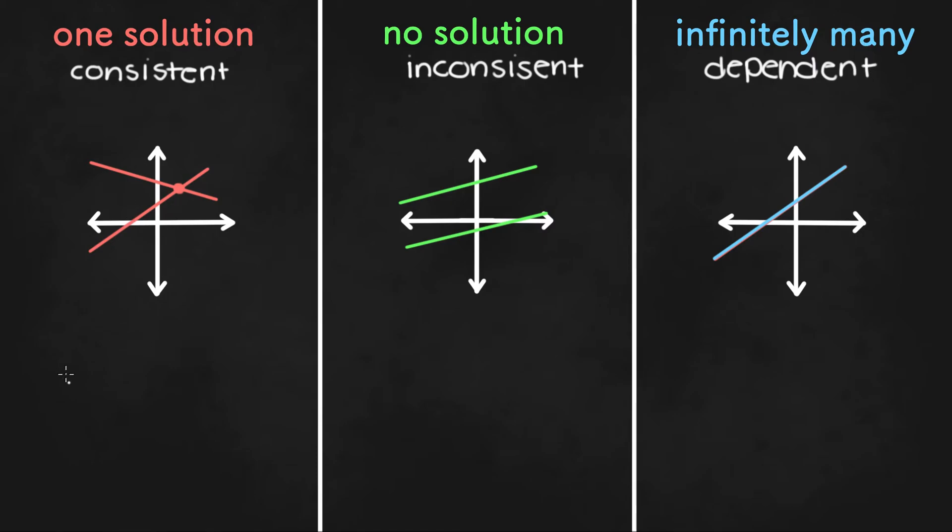Now, an example of a system of equations with one solution would be y equals 2x minus 1 and y equals 3x minus 2. If we solve this, we can set them equal to each other. And then we have 1 equals x. And then plug in the 1 for one of the y values. So we do 2 times 1 minus 1 equals 1. So there's only one solution: x equals 1 and y equals 1.